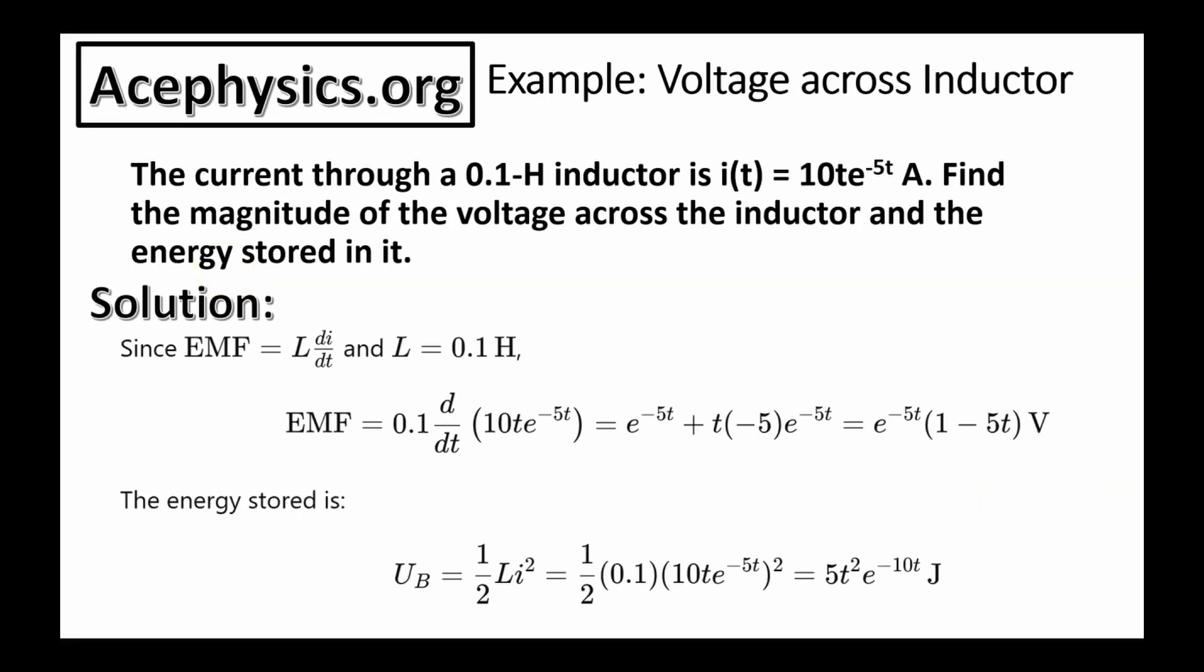Now let's look at a quick example discussing the voltage across an inductor. The current through a 0.1 Henry inductor is given by this function of time. I of T equals 10T multiplied by the exponential E to the negative 5T, and the units are amps.